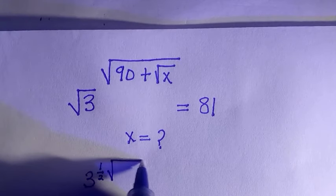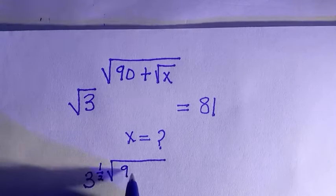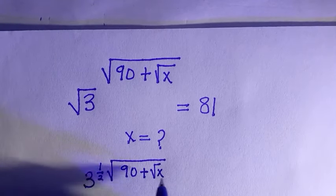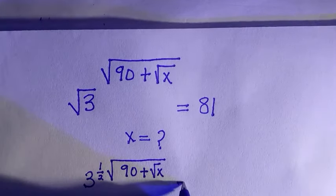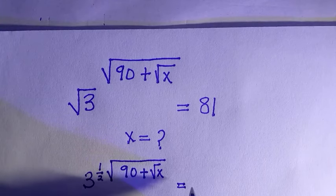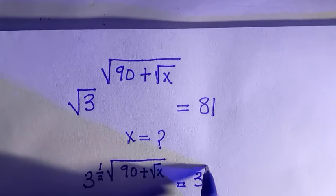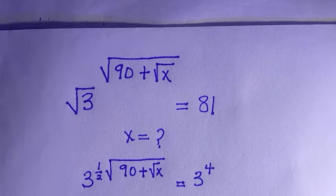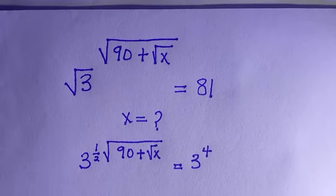And for this, in exponential form we have it as 3 to the power of 4. So that is the exponent form of 81. And since we have the same base, we cancel the two bases.